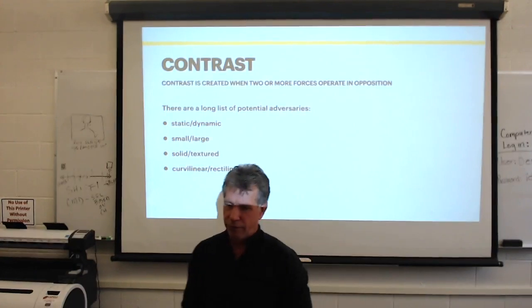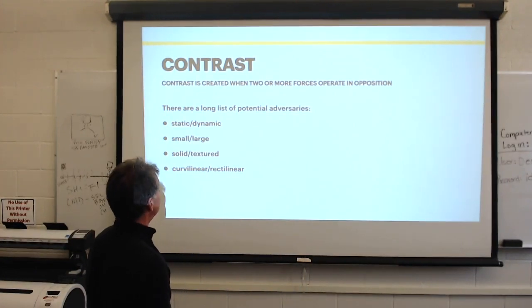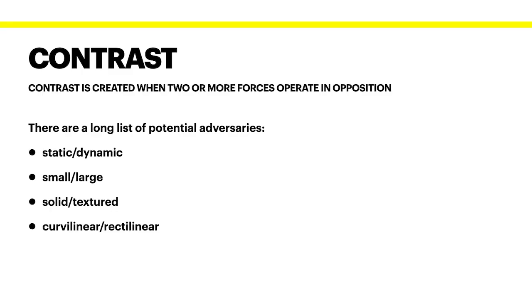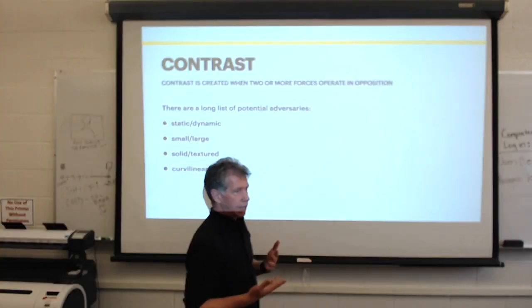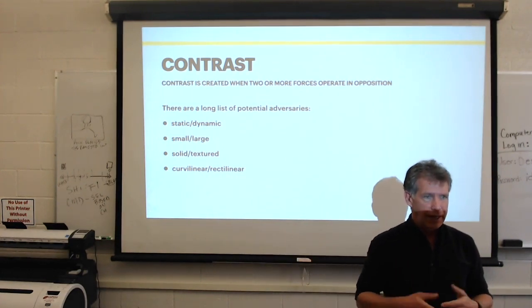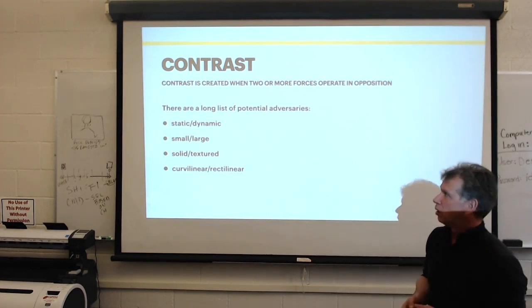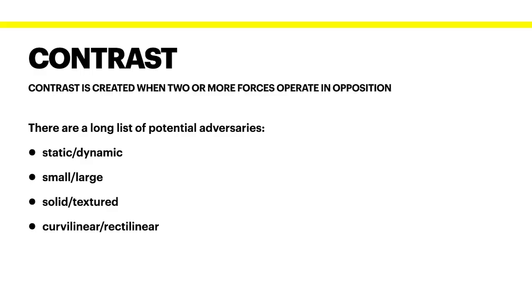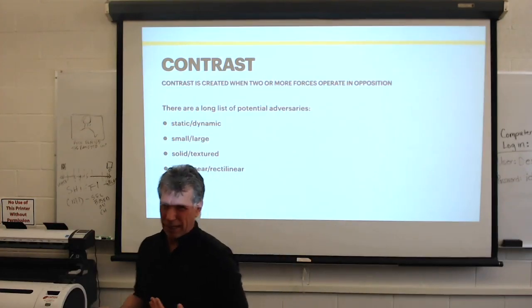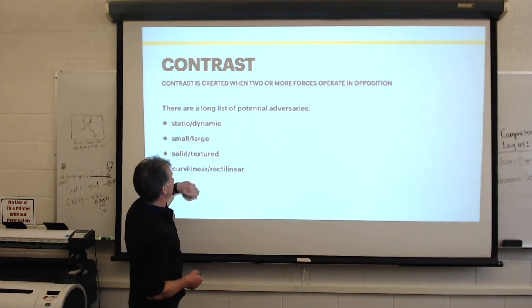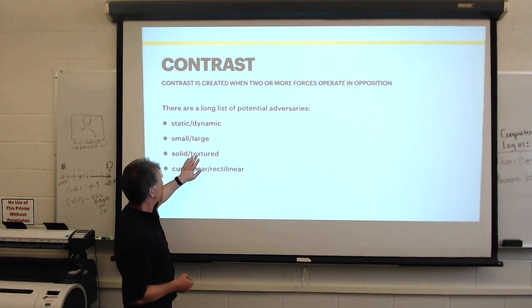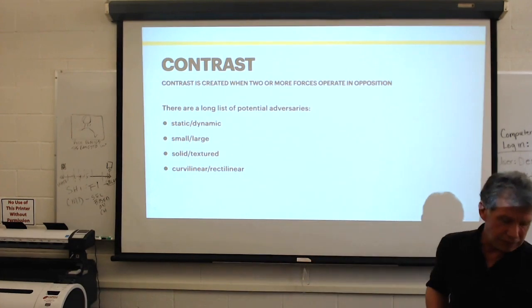So, another way of dominance is contrast, and contrast is created when two or more forces operate in opposition. Honestly, there's a lot of things that work with contrast. Anything, it's like the yin and yang. It's the opposites. These are some of the big ones, though. Static and dynamic, large and small, solid and textured, curvilinear and rectilinear. Those are kind of just the basics. And they, movement, scale, color, and shape. So, these things can be broken down in such a way as to show contrast and dominance.